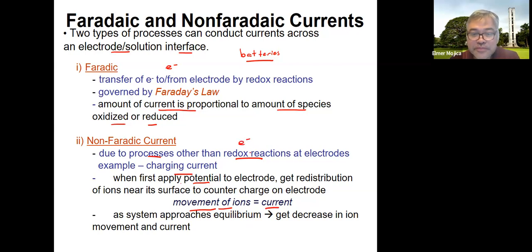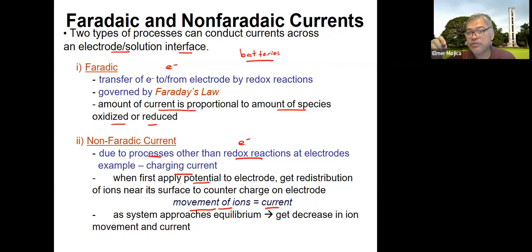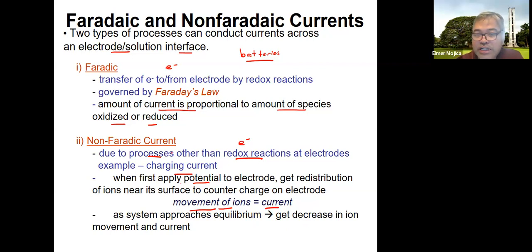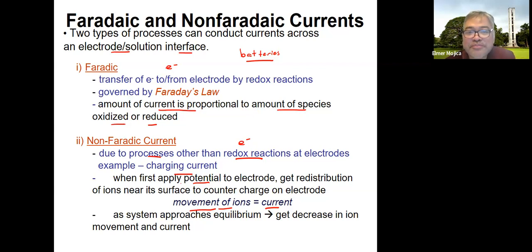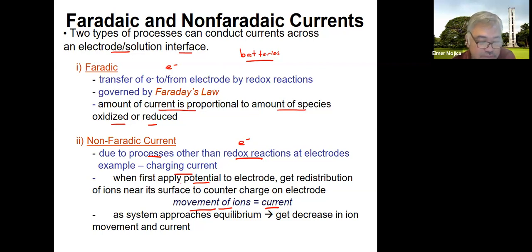In non-Faradaic processes, there is no electron involved. As the system approaches equilibrium, there is a decrease in ion movement and current. Why? What happens when you have a system at equilibrium? It may seem everything stops, but what really happens during equilibrium is there is an equal rate of the forward and backward reaction.